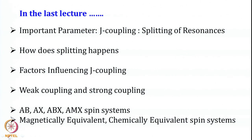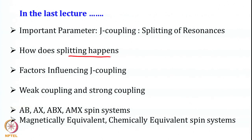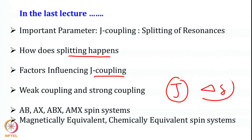We asked the question: how does this splitting happen? We looked at how two spins coupled by a bond cause splitting in the resonances. We discussed the factors that influence J coupling, and we looked at two kinds of coupling — weak coupling and strong coupling. This classification was not based on the strength of the J value, but on the J value compared to the difference in chemical shift between two spins. That was the origin of weak coupling and strong coupling.